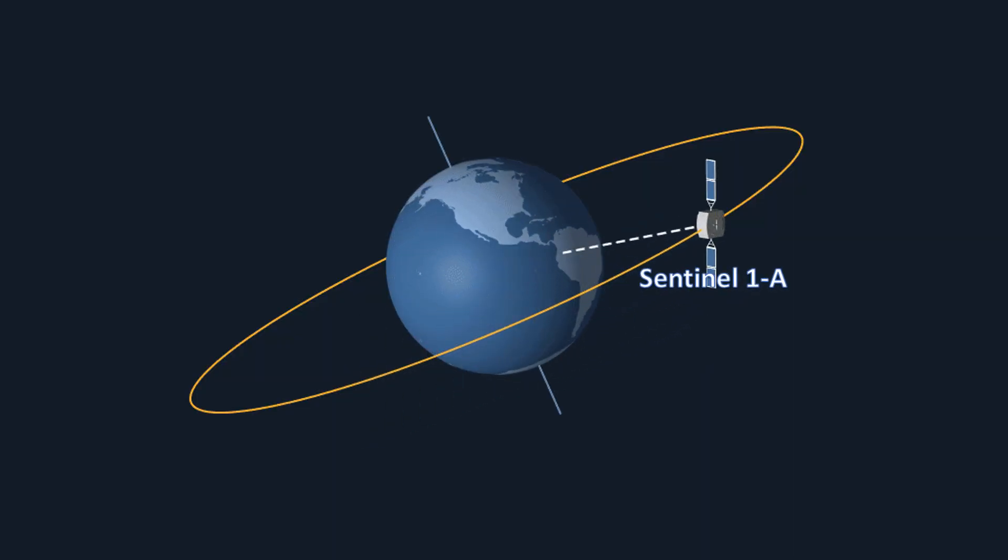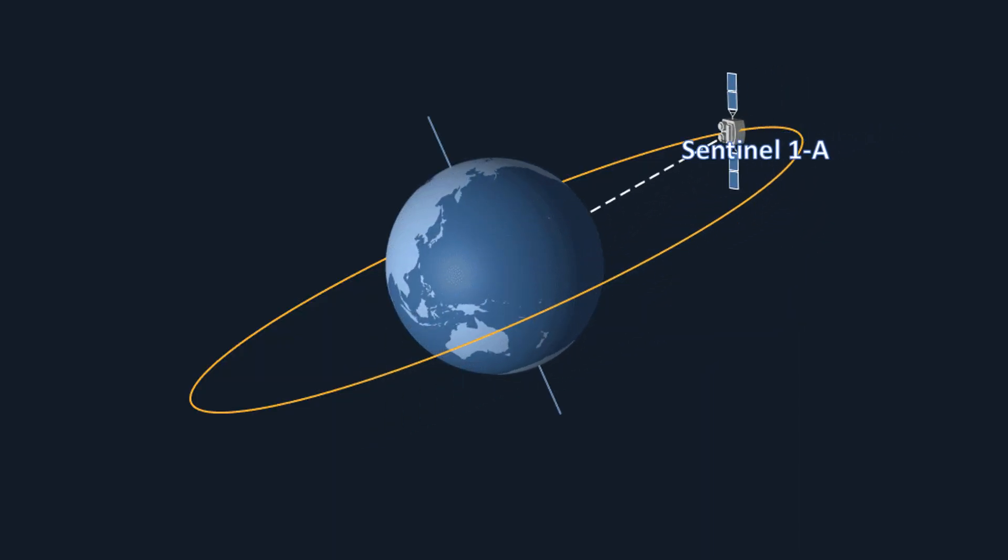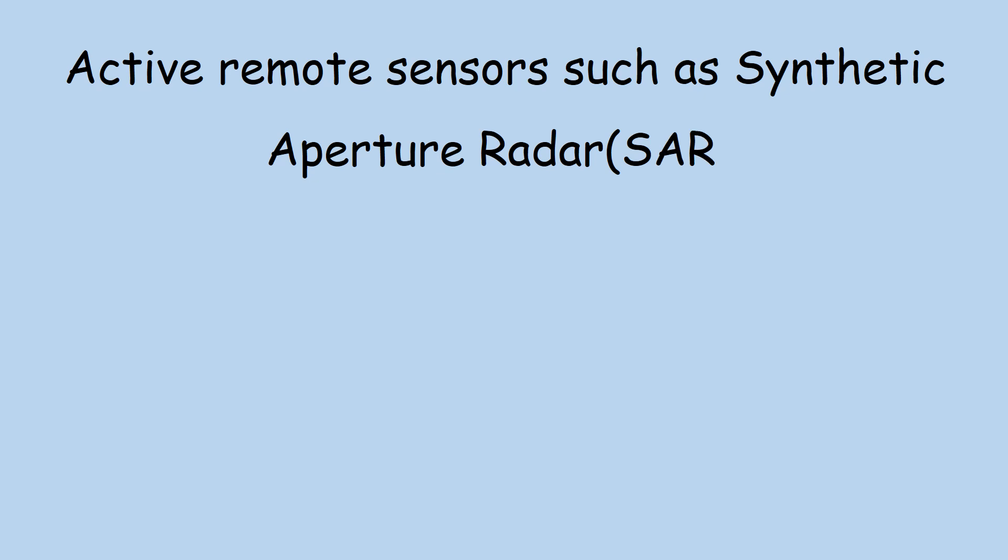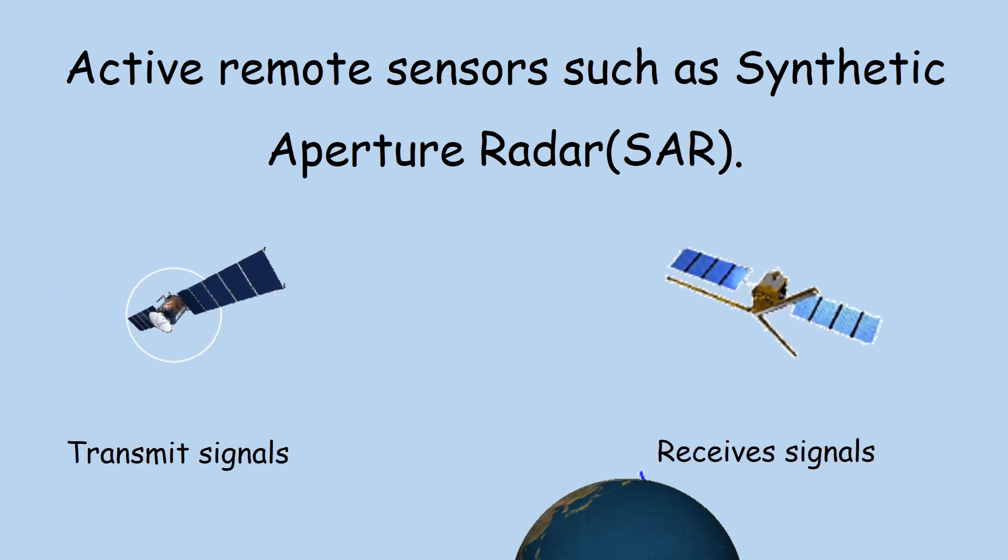Satellite data have been often used to produce paddy rice maps and we use Sentinel-1A satellite for mapping paddy area in the adopted location. Active remote sensors such as synthetic aperture radar first transmit wave signals then detect the signals that are returned from the Earth surface.